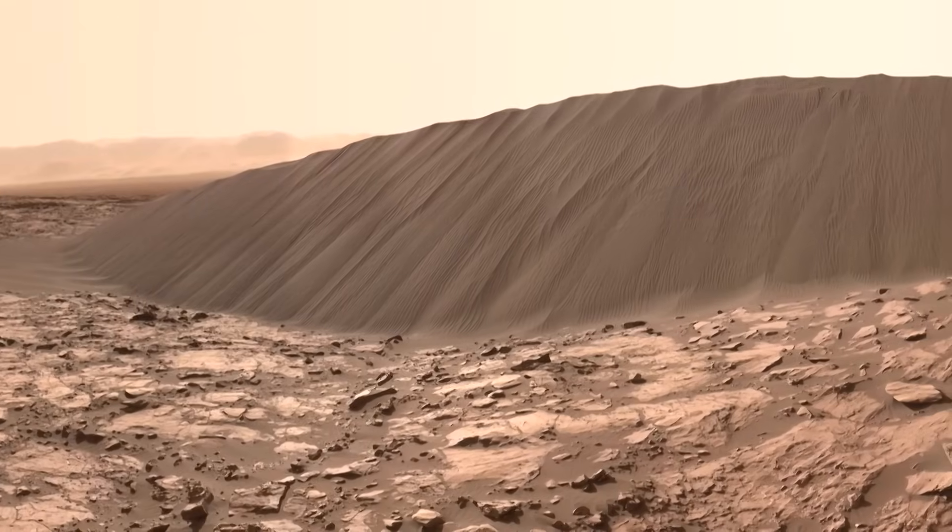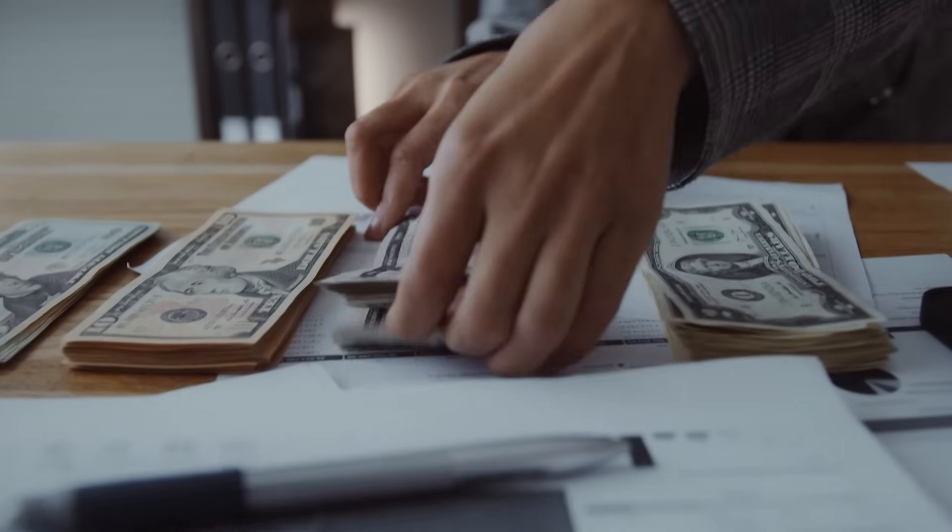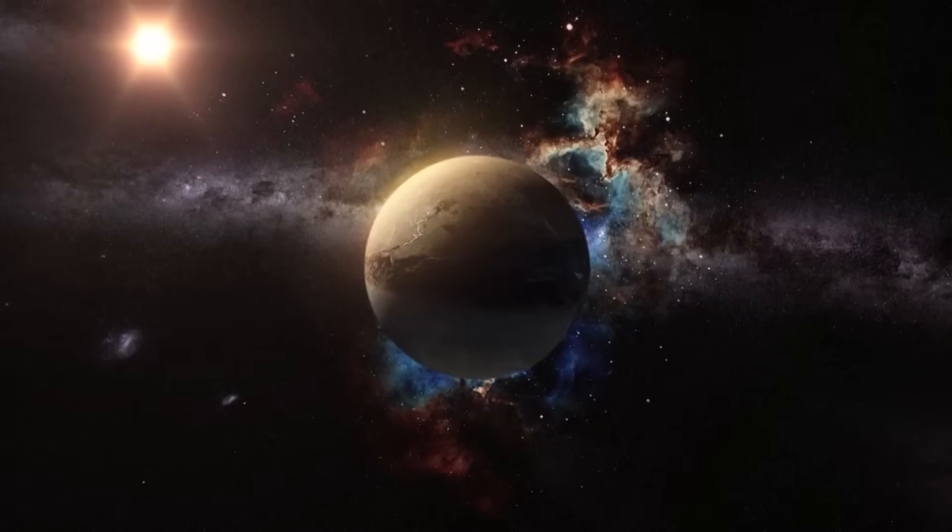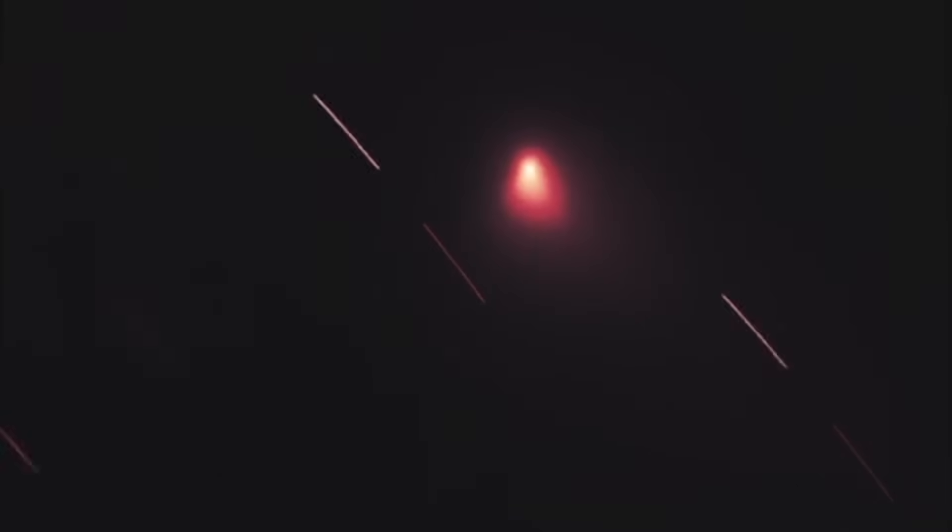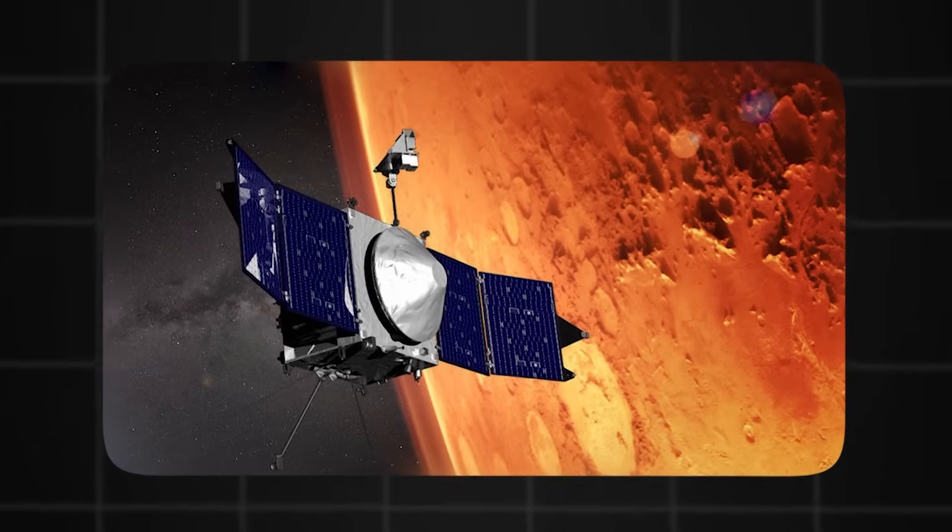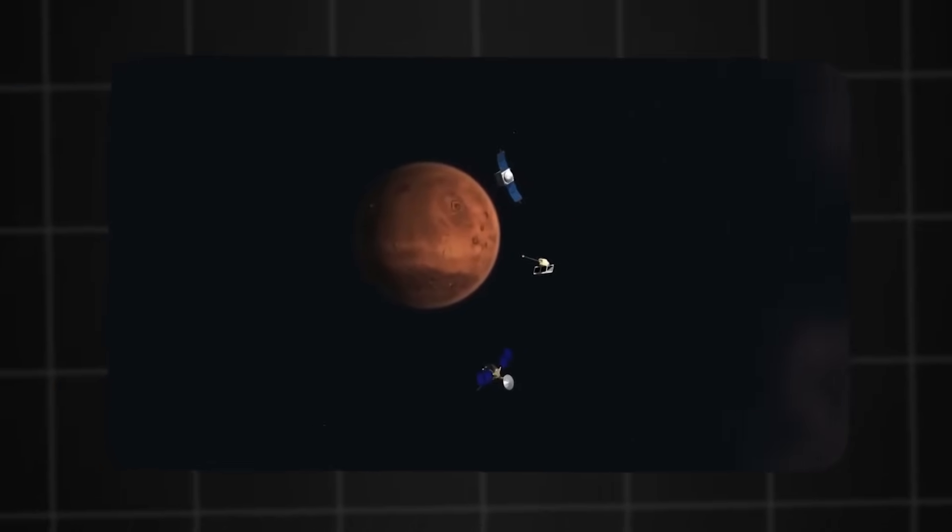For decades, Mars has been humanity's proving ground for space exploration. Billions of dollars, countless missions, and even future dreams of colonization hinge on its stability. An interstellar comet impact could jeopardize much of that. Satellites like MAVEN and the Mars Reconnaissance Orbiter could be damaged by debris or dust clouds. Rovers could be buried under layers of ejecta or rendered useless by darkened skies.